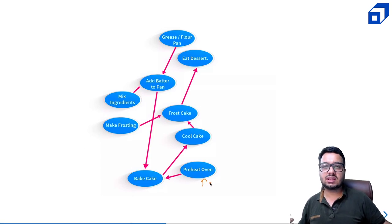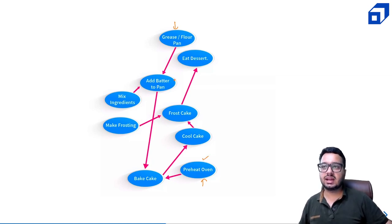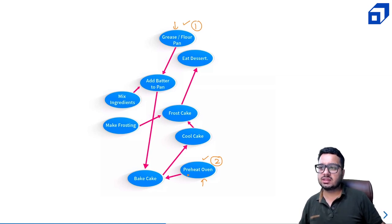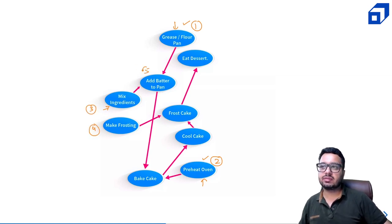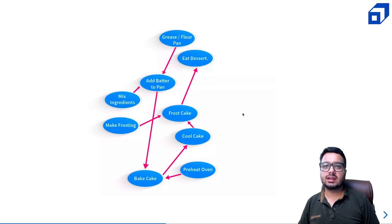If you visualize all the baking steps as a graph, preheat oven and greasing the pan have no dependencies — they are starting points. Mixing ingredients, adding to pan, baking, cooling, and icing follow in order. Tasks without dependencies form the starting point of topological sorting. Following all steps in this order allows you to bake the cake successfully.